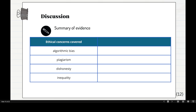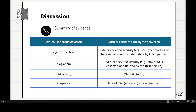Ethical concerns that are commonly covered include algorithmic bias, plagiarism, dishonesty, and inequality — you should be very familiar with those. But one area that has not been researched or is rarely covered: data privacy and security. Things like security breaches, hacking, and misuse of students' data by third parties. Nobody actually mentioned data privacy and security in terms of how data is collected and utilized by first parties.